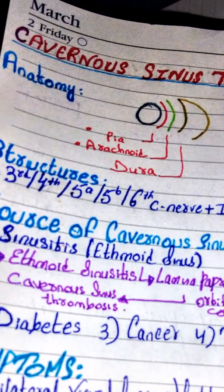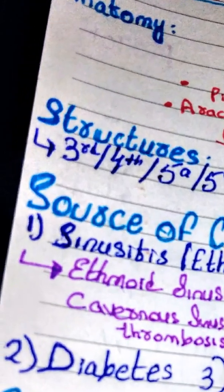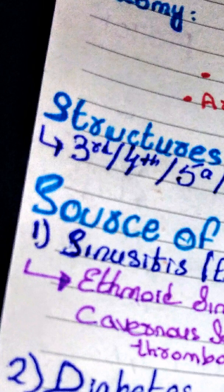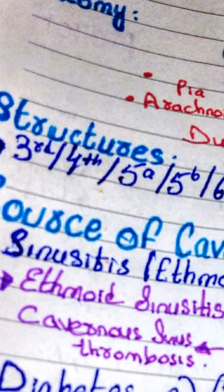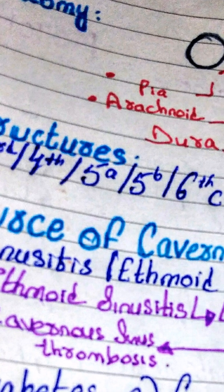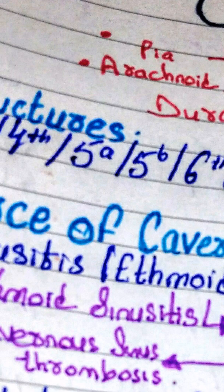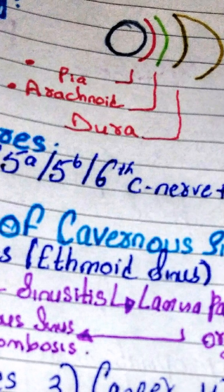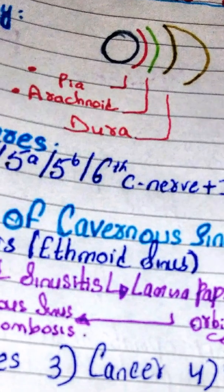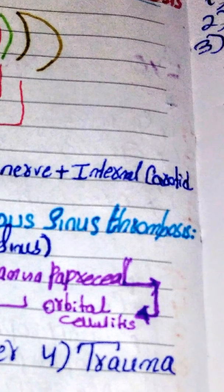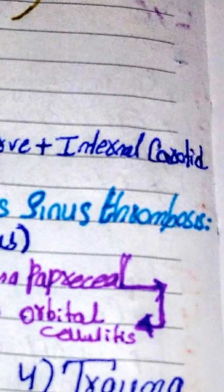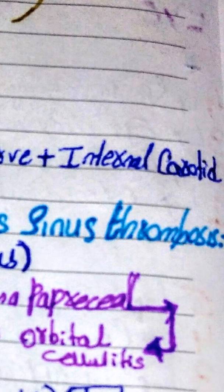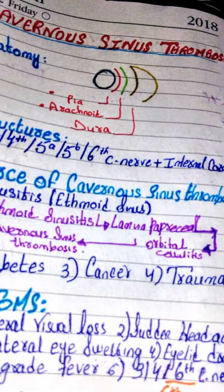Now let's see what structures pass through the cavernous sinus. From the cavernous sinus there is passage of the third cranial nerve, fourth cranial nerve, ophthalmic division of the trigeminal nerve (V1), maxillary division of the trigeminal nerve (V2), and the abducens nerve or sixth cranial nerve. Also, a very important artery passes through the cavernous sinus — the internal carotid artery — which is the only artery that passes through our dural venous sinus.